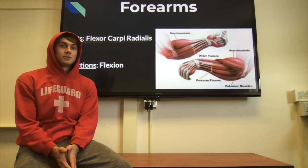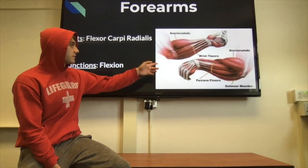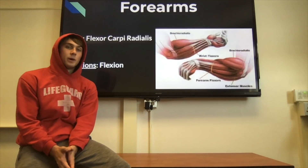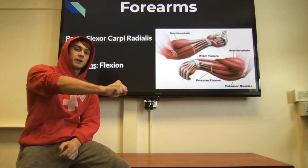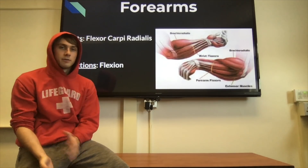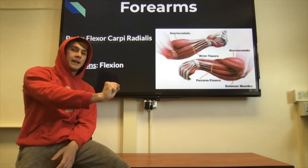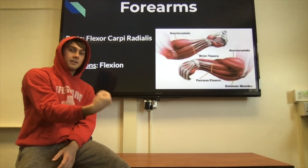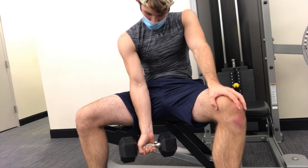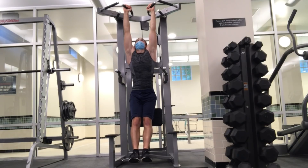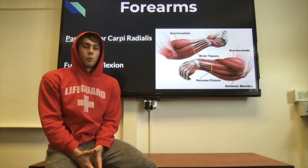The forearms have multiple muscles, but the key ones are the wrist and forearm flexors — the flexor carpi radialis. Your forearms are responsible for flexion: gripping bars and dumbbells, and twisting your forearm and hand. To get stronger forearms, do dumbbell wrist curls, dead hangs, and farmer's walks. All of these exercises will improve your forearm and grip strength.